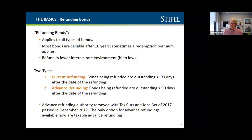Refundings are occurring all the time — many districts have taken advantage of the low interest rate environment to issue refunding bonds. There are two types of refundings: current refundings, which are issued within 90 days of a bond issue's call date. A call date is a date in the future — typically in the eight, nine, or ten-year range — where bonds can be refinanced without penalty.